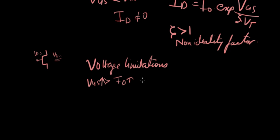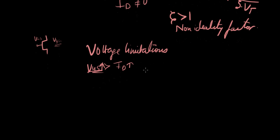What happens is the oxide below the gate breaks down irreversibly, and your transistor is totally damaged. So there are limitations on VGS, you have to remember that.